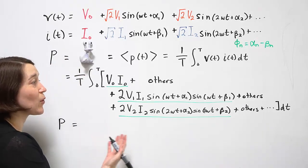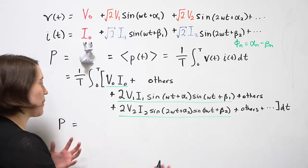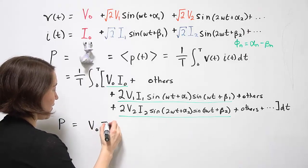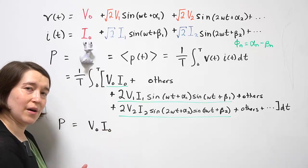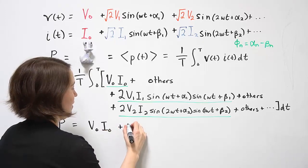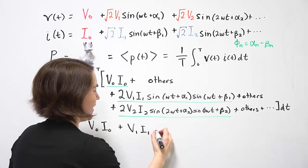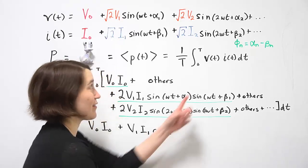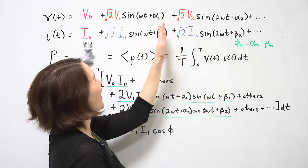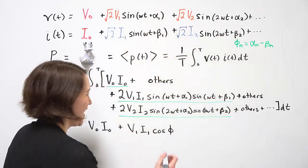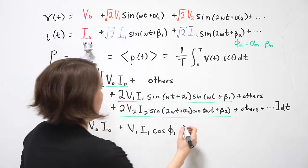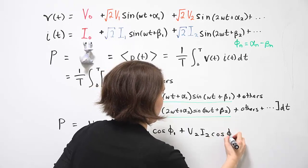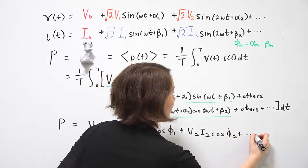Once we do all the math for that out, we will find that the power can be broken down into each of the components. So we'll get voltage V0I0 plus V1I1. And we're actually going to get cosine of the phase shift. Remember this is between the phases of the voltage and the current. 1 plus V2I2 cosine of V2 and so on.